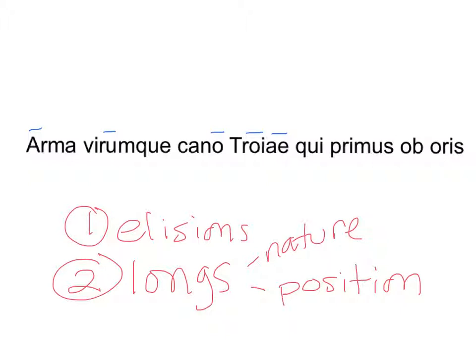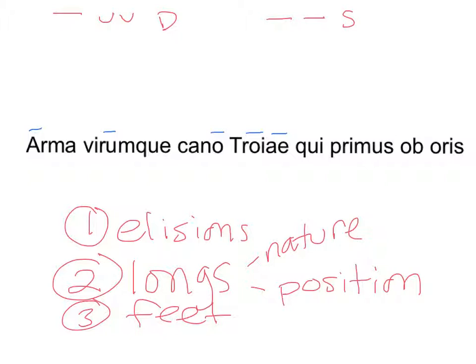Now I start thinking about my feet. A dactyl is long-short-short, and a spondee is long-long. I remember that in this pattern I always have a spondee at the end, so I can go ahead and put in a long and an X there — the final foot — and mark that foot break. I also know the fifth foot is almost always long-short-short, and since that fits, I know that's right. Now I've got two of my six feet figured out.